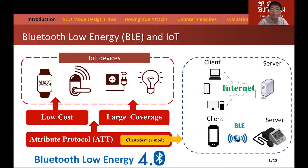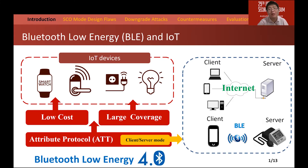So what is BLE, or Bluetooth Low Energy? BLE is the first generation of Bluetooth. When compared with Bluetooth Classic, it has multiple advanced features such as low power consumption, large coverage, and it introduces the attribute protocol, known as the ATT protocol. The ATT protocol groups all the data in the format of attributes and allows our smartphone to work with a BLE device in a client and server mode, like what happens in TCP/IP communication.